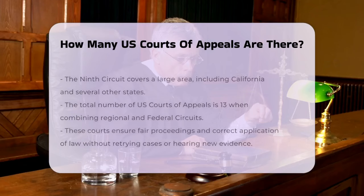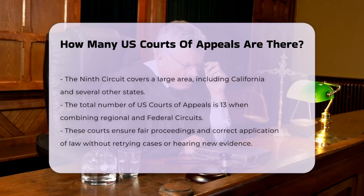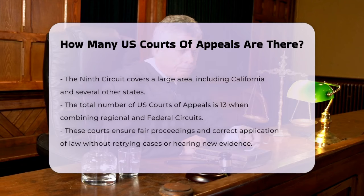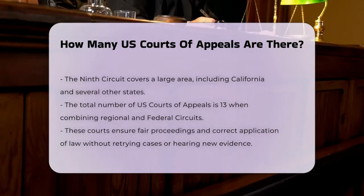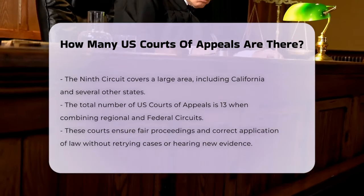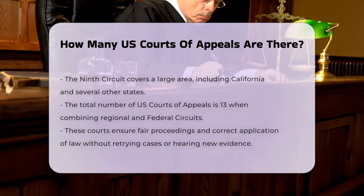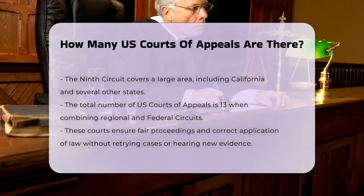The total number of these courts is derived from the combination of the 12 regional circuits and the single Federal Circuit. Therefore, when we count all these courts together, we find that there are 13 U.S. Courts of Appeals in total.